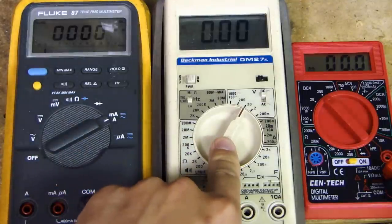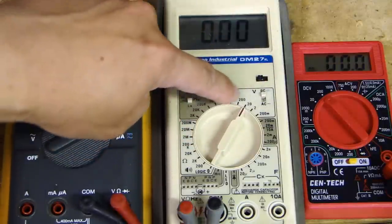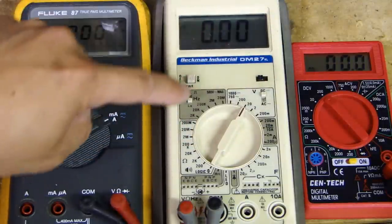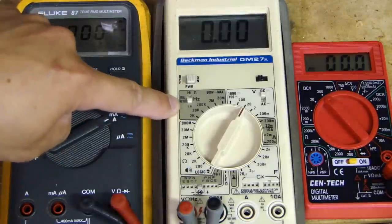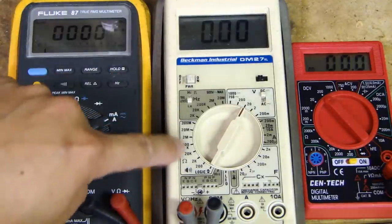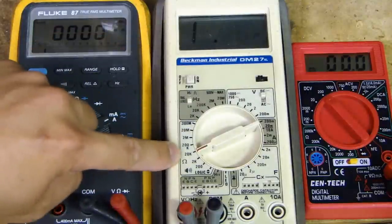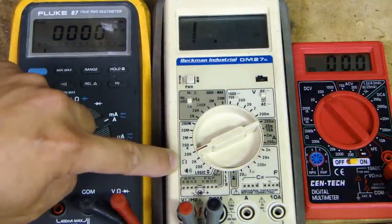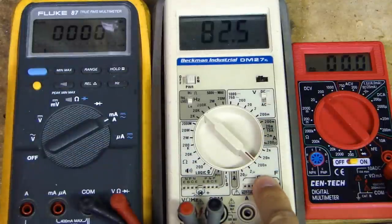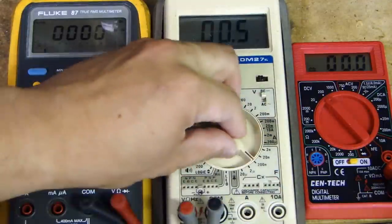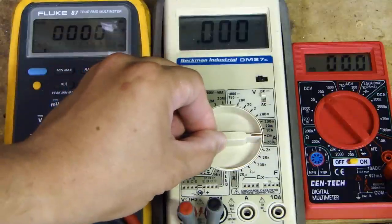Over here on this multimeter is sectioned off. So this section is voltage. You select DC and AC. Over here, this is for frequency. So it can measure frequency also. Down here is the resistance measurement, the ohm. Over here, capacitance of capacitors. This section is for amp currents.